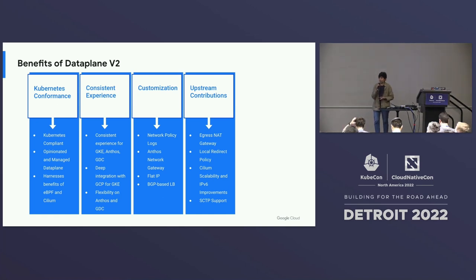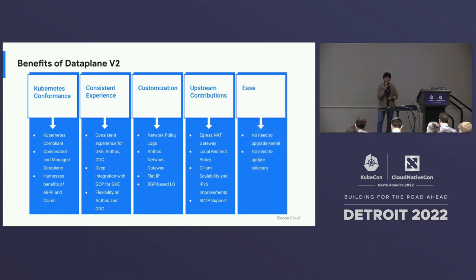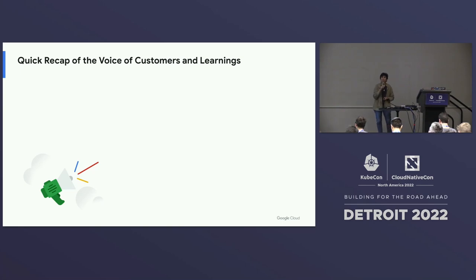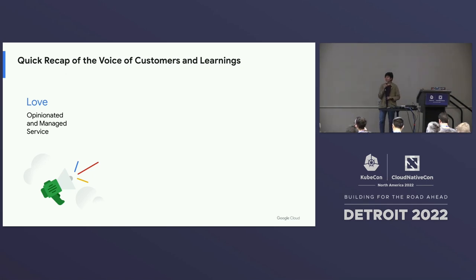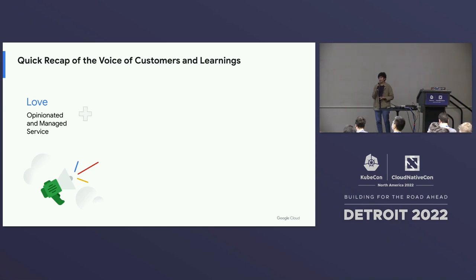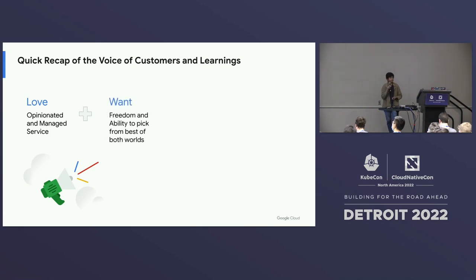Last but not least, ease of operation — we are able to upgrade our fleet without needing to upgrade sidecars or the kernel. But we have also been hearing feedback from customers: they love this opinionated model of Dataplane V2 because that is how they get SLO guarantees, performance, and quality. But at the same time, they also want to use open source tools like Hubble or Tetragon. That is where we have been working for the last six months on modularization.